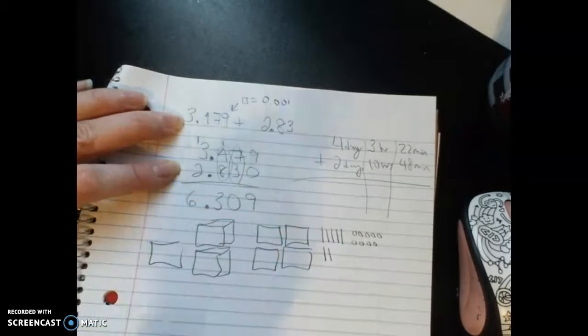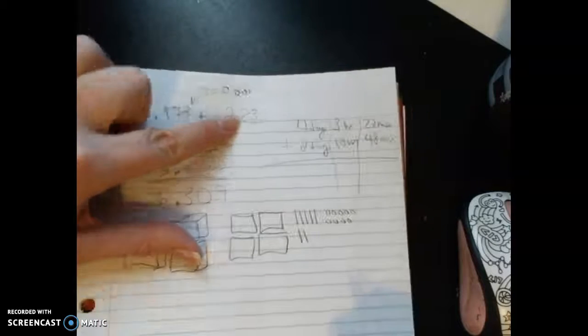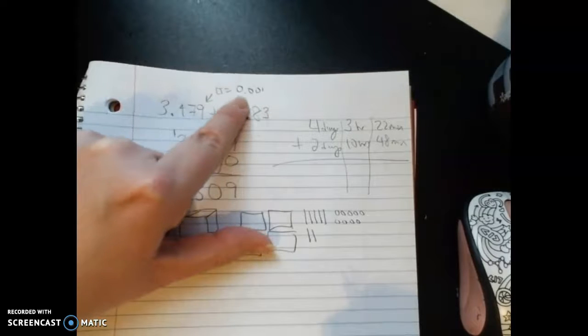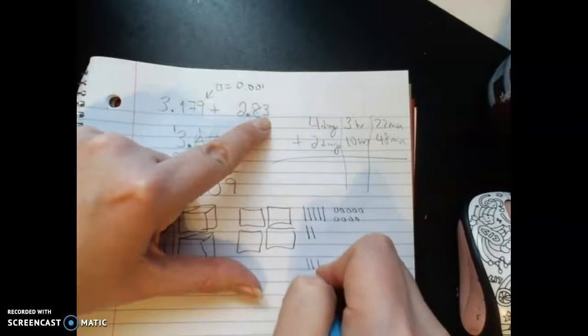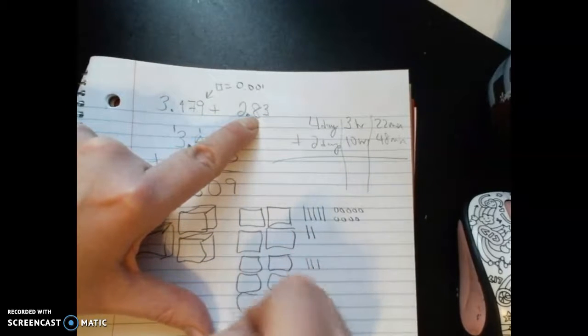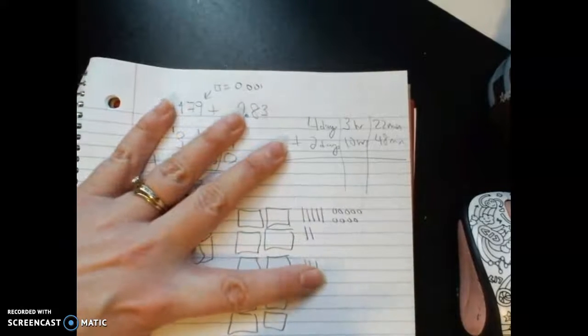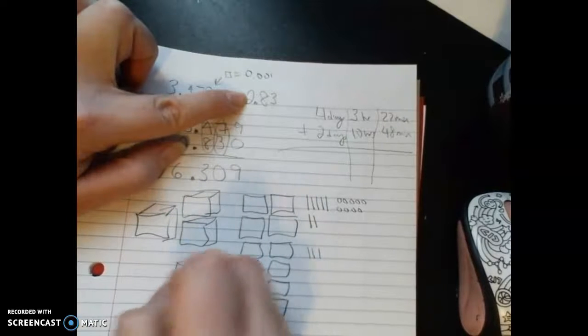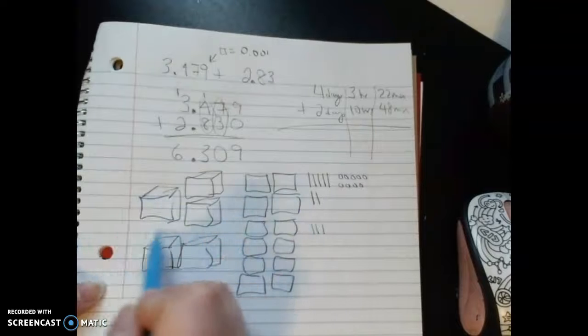Remember those are not set in stone—they can take on different values depending on how many place values you have. Over here, I have zero thousandths and 3 hundredths—1, 2, 3. I have 8 tenths—1, 2, 3, 4, 5, 6, 7, 8. And then I have 2 wholes. When you draw the picture, you should be able to see where one number is and where the other number is.